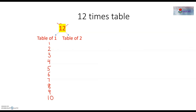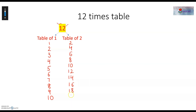And then we will write the 2's table. So, 2 1's are 2, 2 2's are 4, 2 3's are 6, 2 4's are 8, 2 5's are 10, 2 6's are 12, 2 7's are 14, 2 8's are 16, 2 9's are 18, 2 10's are 20. And then we will add the 10's digit of the 2's table with the table of 1.